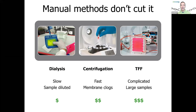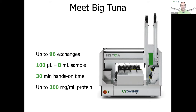What we're going to do is take the best features of all of these — the ease of use of dialysis, the straightforward process of centrifugation, and the protein quality benefits of TFF — and combine them into one platform that can be used at smaller scale, lower volumes, and in a high throughput manner. That's how we came up with Big Tuna.